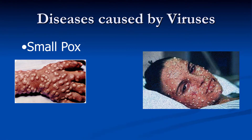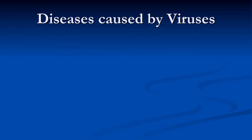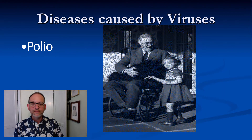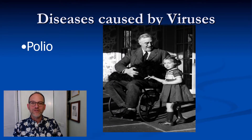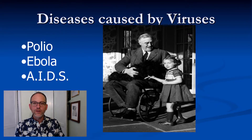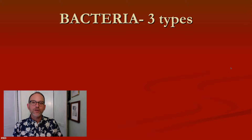Smallpox is what explorers brought from Europe to North America, killing millions of Native Americans who had no natural resistance to it. Colds and flu are also viruses. Polio — one of our presidents came down with polio and became paralyzed from the waist down; see if you can name which president that is. Other diseases caused by viruses include Ebola and AIDS.